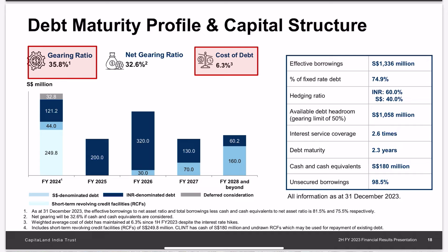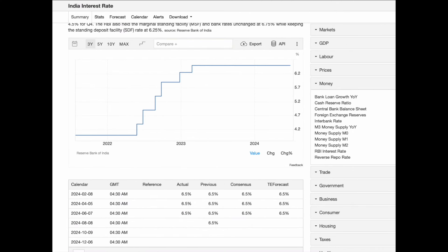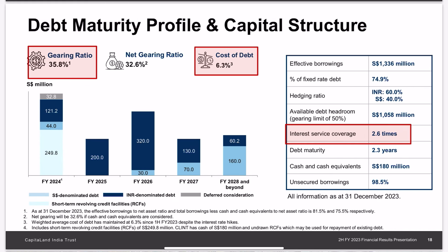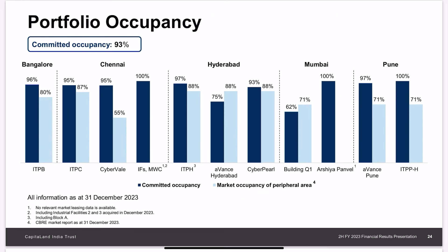Looking at their debt, the gearing ratio is fine at 35.8 percent, but what surprises me is the high cost of debt at 6.3 percent. Because of this, the interest coverage ratio is at a low of 2.6 times. India's average interest rate is around 6.5 percent, so it's not surprising that CapitaLand India Trust has a high interest rate. However, the bigger issue is that their debt maturity is only 2.3 years, with most debts requiring refinancing in financial years 2024 to 2026. Based on India's average interest rates, I would not be surprised if we continue to see an increase in cost of debt when loans are refinanced.